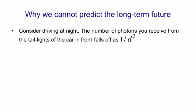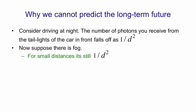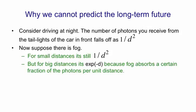That's assuming that the air is clear. But now suppose there's fog. Over short ranges, the number of photons you get from the taillights in front of you still falls off as 1 over d squared, because over a short range, the fog hardly absorbs any light. But for large distances, it falls off as e to the minus d. And that's because fog has an exponential effect. Fog absorbs a certain fraction of the photons per unit distance.